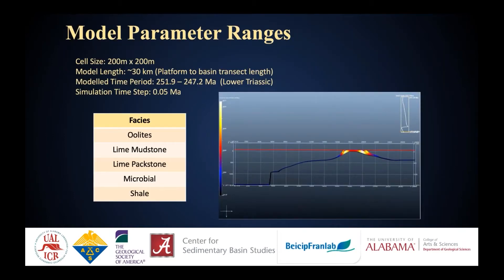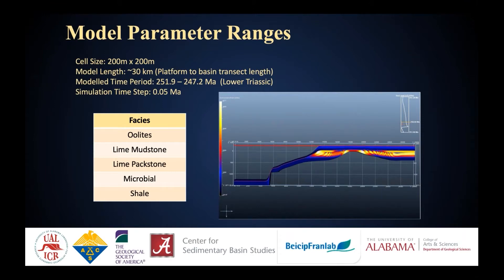The data used to generate these models are a combination of information collected from the field and literature study. What I'm trying to do is not just replicate what I see in the field, but also to understand and quantify which parameters exert the greatest control on the geometry and architecture of these carbonates. I've modeled five facies — all of which are also present in the Smackover — and I've done sensitivity analysis on all the parameters I'll be discussing in the following slides.